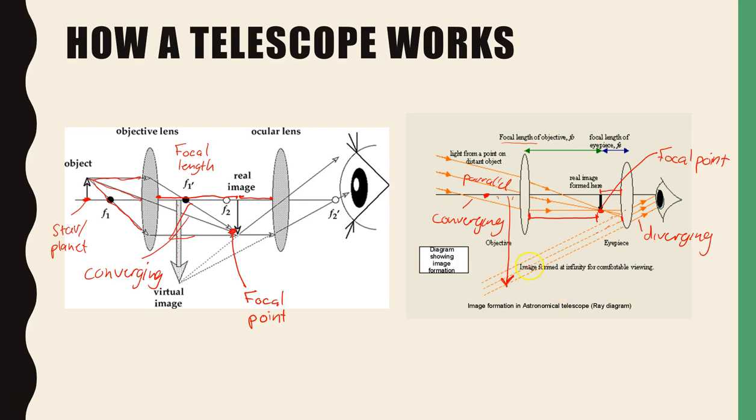So the image is now upside down from what it began. This is the right way up. It's now upside down, and it's much larger. This is how telescopes work.